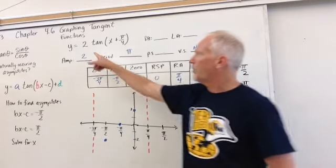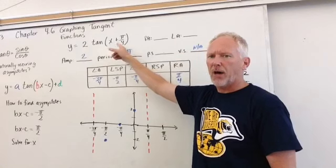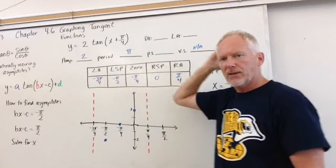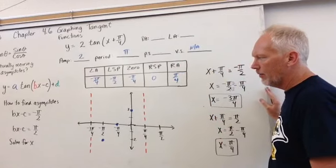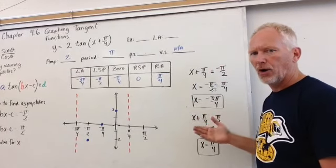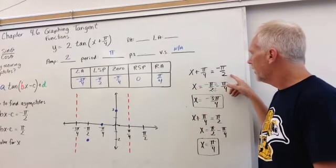So our amplitude for this function is 2. And our period will be pi x plus pi over 4 is what we need to look at to determine where those vertical asymptotes are occurring. So we set x plus pi over 4 equal to negative pi over 2.